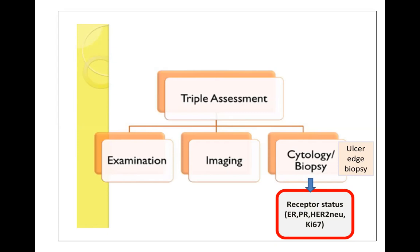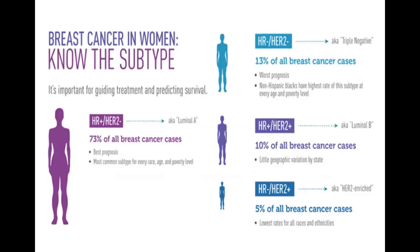Why do we need receptor status before? Because probably this patient is not a candidate for surgery right now, and she will need to have her disease downstaged first by chemotherapy. After that, the disease will be operable. So according to these receptor statuses, breast cancer has been divided into different subtypes.